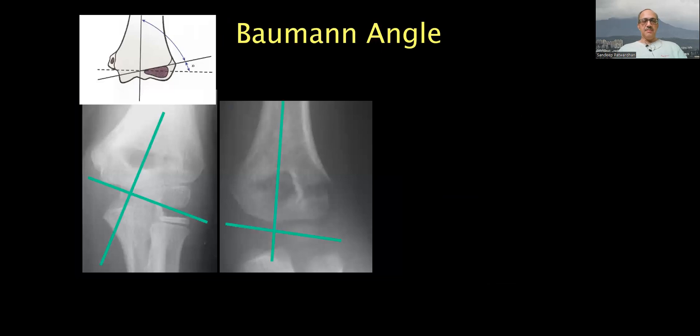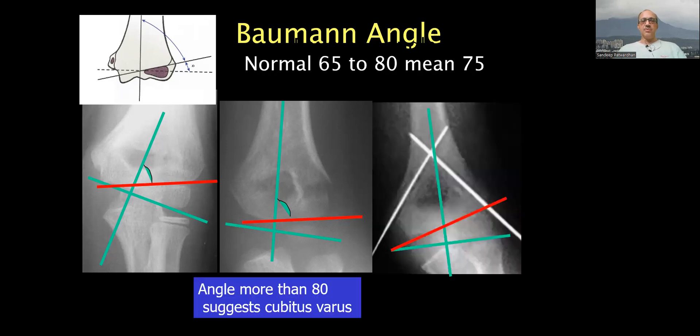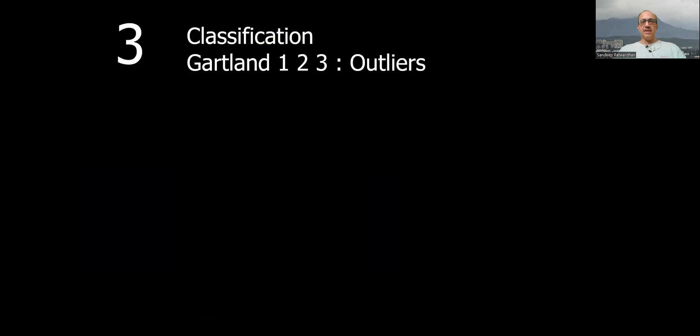Calculate the Baumann's angle. Make sure that you reduce it to normalcy which is about 65 to 80 degrees so that you don't end up with cubitus varus. That's very, very critical.